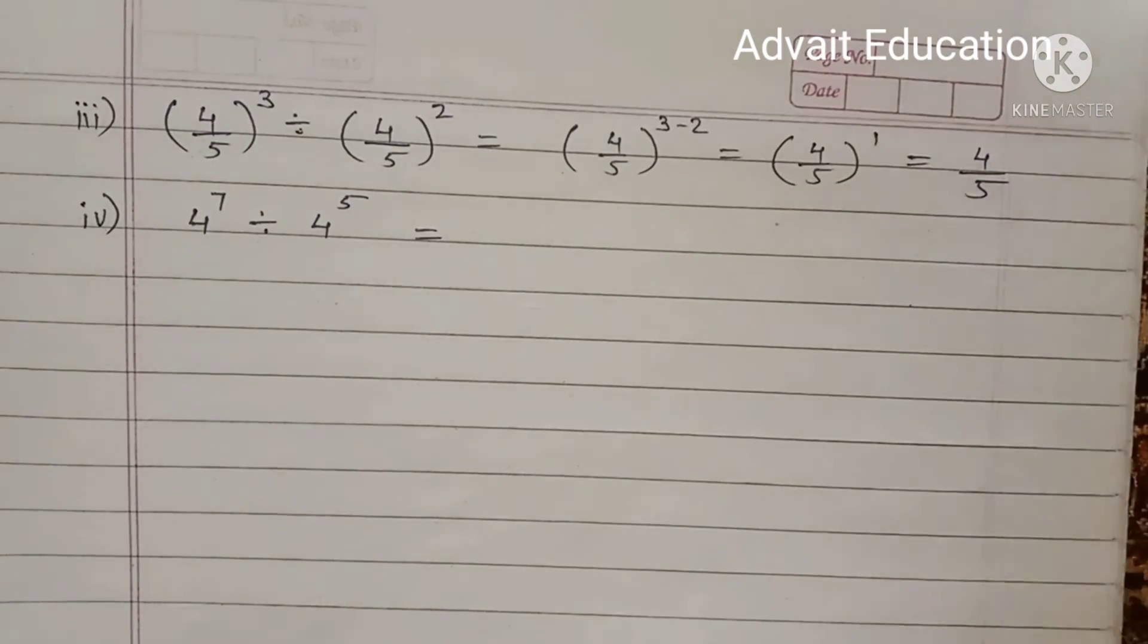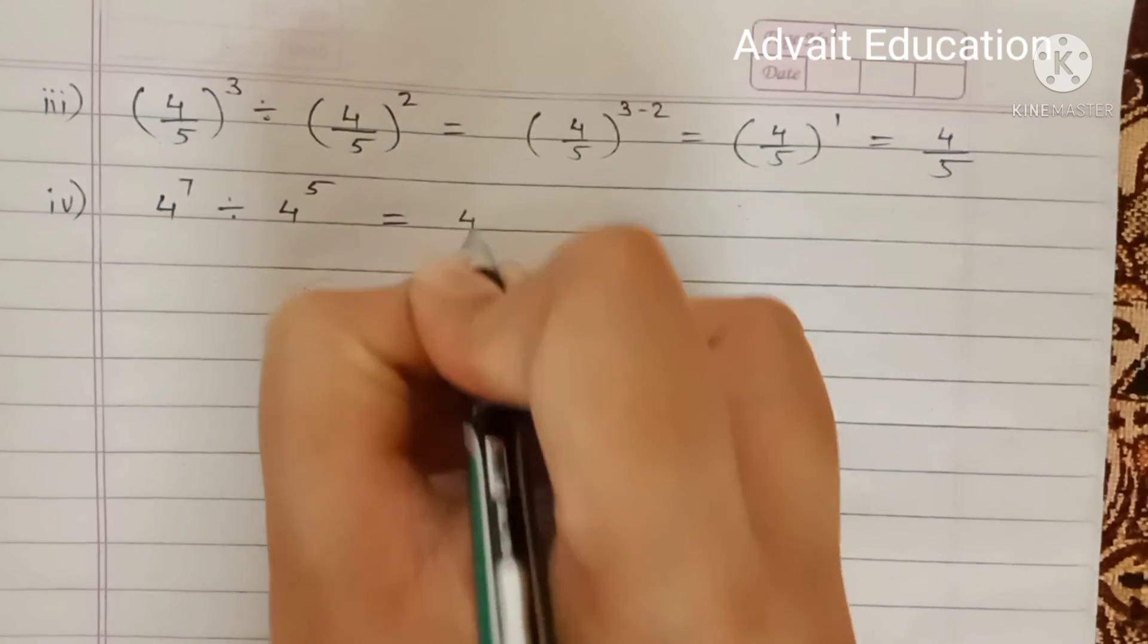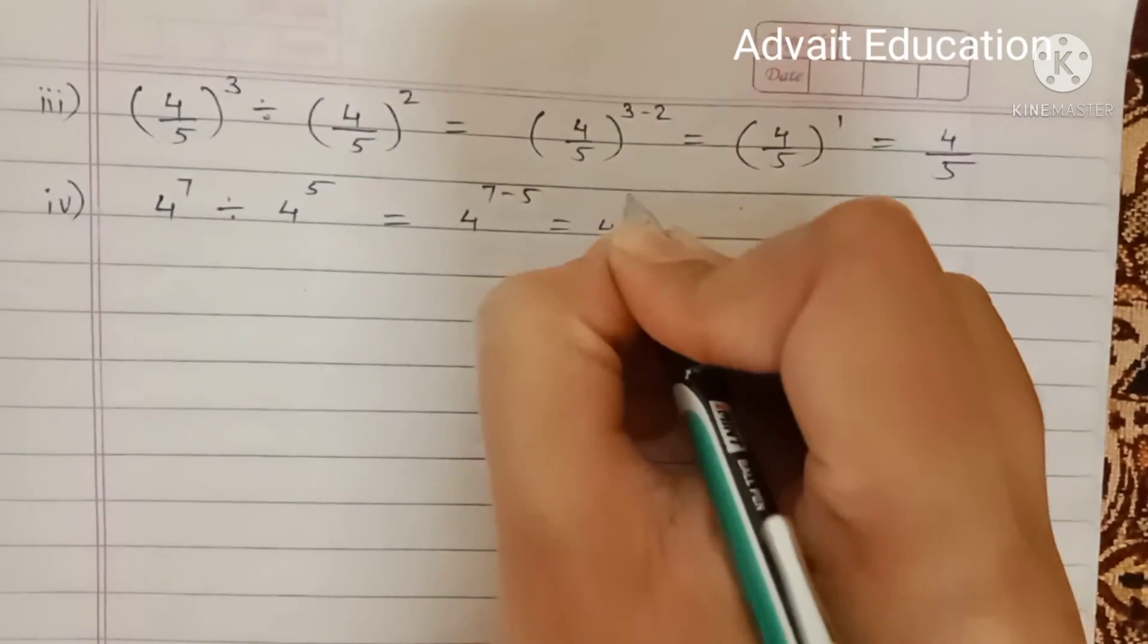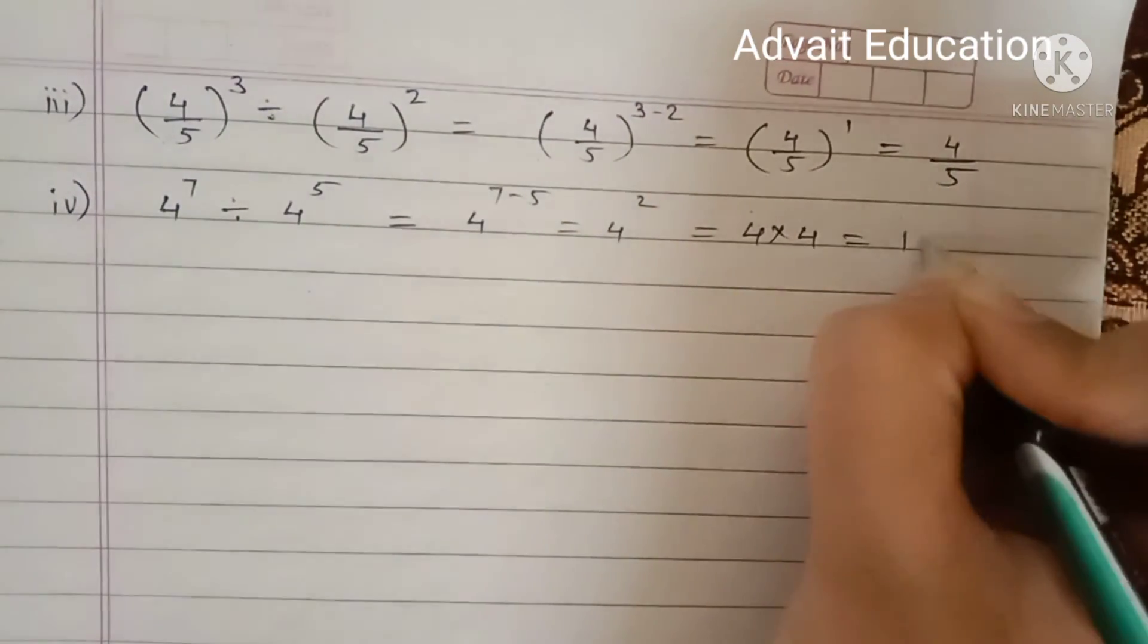Next, 4 raised to 7 divided by 4 raised to 5. 4 raised to 7 minus 5. Means 4 raised to 2. Means 4 into 4. Answer is 16.